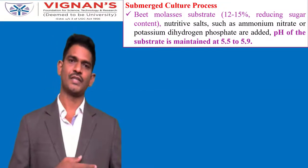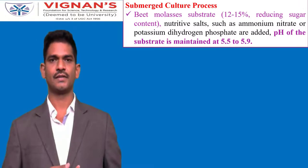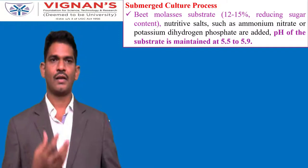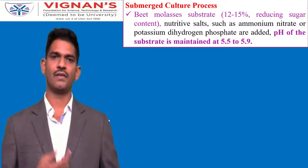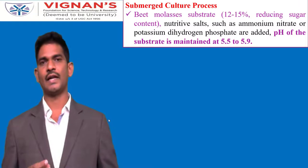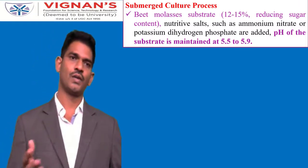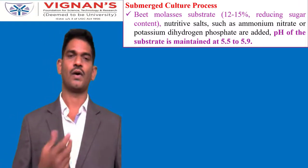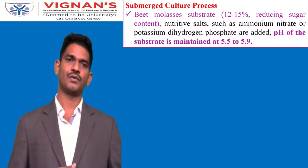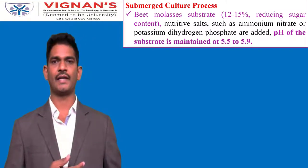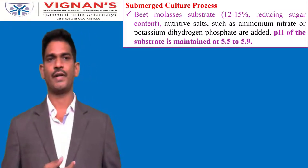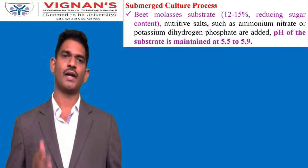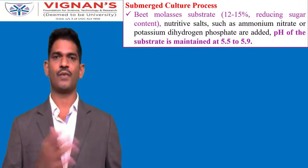The other process for producing citric acid is the submerged cultivation process. In this process, beet molasses is the preferred raw material. The medium should contain 12 to 15% reducing sugar content, along with nutritive salts including ammonium nitrate and potassium dihydrogen phosphate. The pH of the medium must be maintained at 5.5 to 5.9.